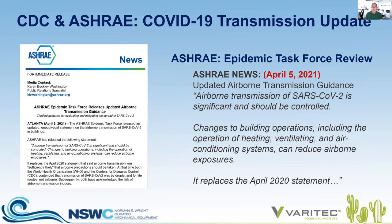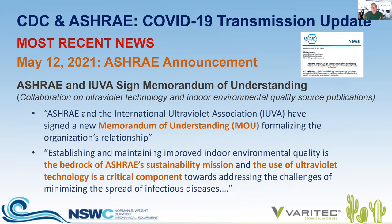ASHRAE's Epidemic Task Force updated its position on April 5th, 2021, stating with more aggressive language that airborne transmission of SARS-CoV-2 is significant and should be controlled. It says changes to building operations, including the operation of heating, ventilating, and air conditioning systems, can reduce airborne exposures. We're seeing more pressure from government and standard-writing agencies recognizing that airborne transmission is a true risk.